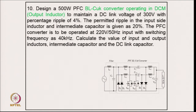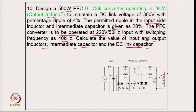Example 10: design a 500 W power factor corrected bridgeless Cuk converter operating in discontinuous conduction mode for the output inductor only, to maintain a DC link voltage of 300 V with 4 percent ripple. Permitted ripple in input inductor and intermediate capacitor is 20 percent. Input voltage is 220 V, 50 Hz; switching frequency is 40 kHz. In the bridgeless Cuk circuit, the upper converter operates for the positive half cycle and the lower for the negative, with input inductors, energy transfer capacitors, and output inductors being identical.